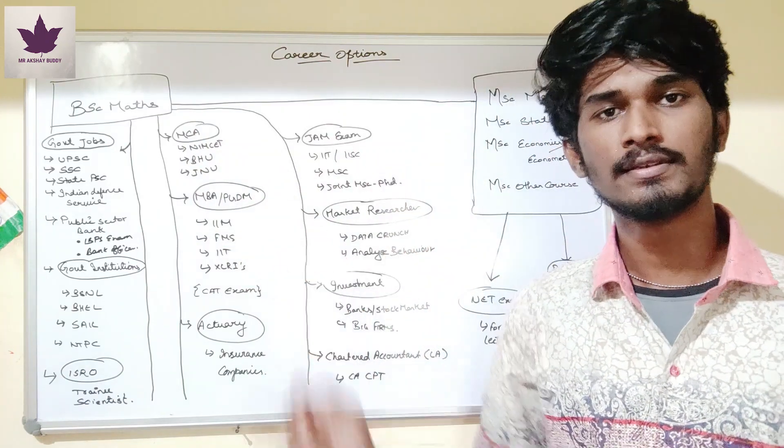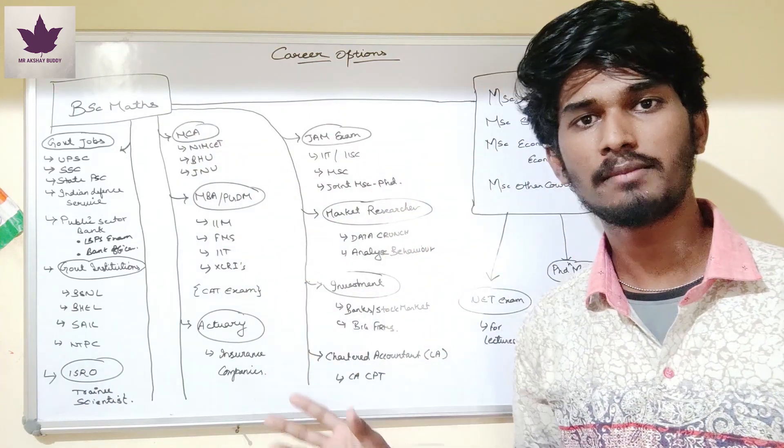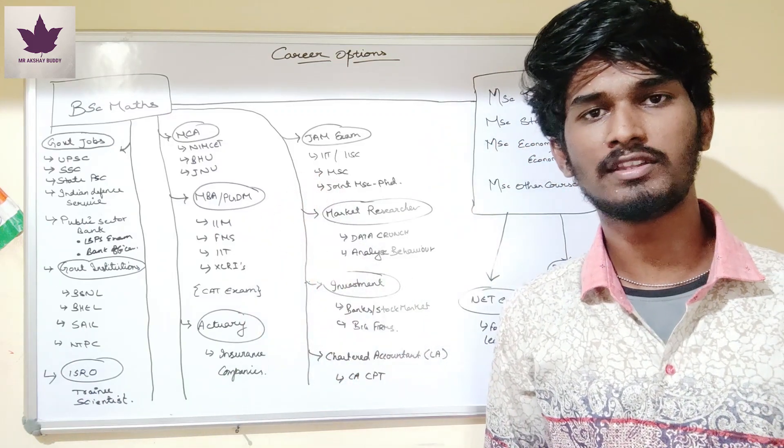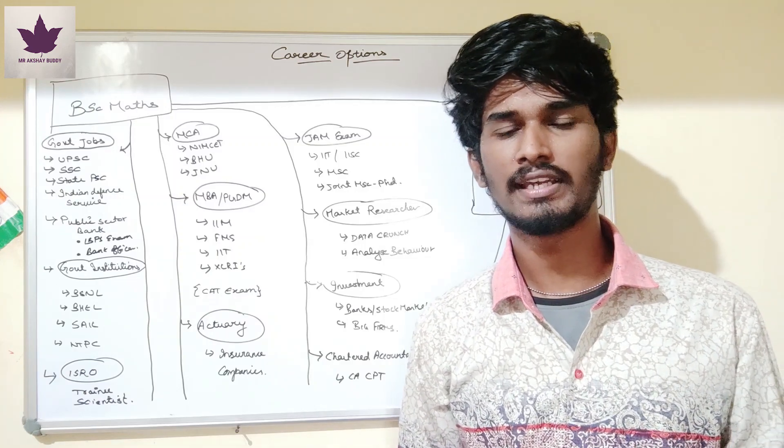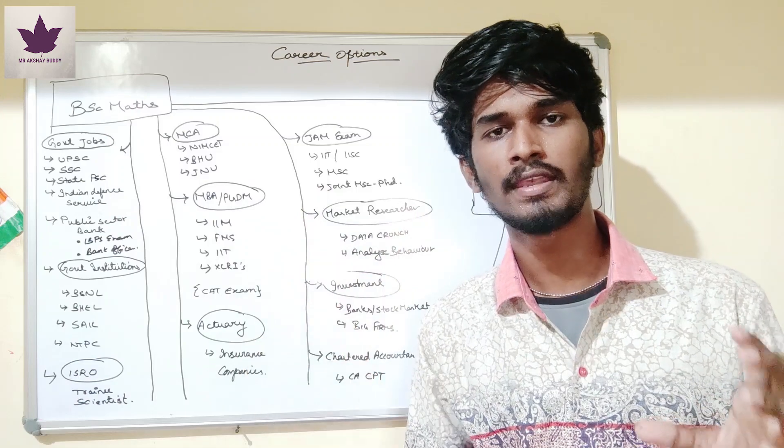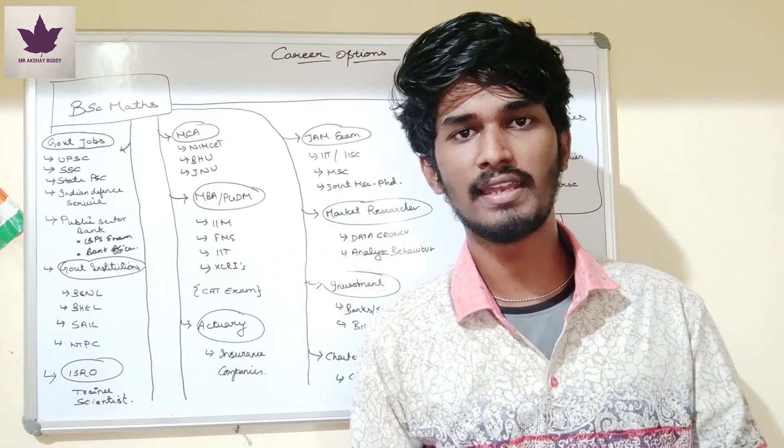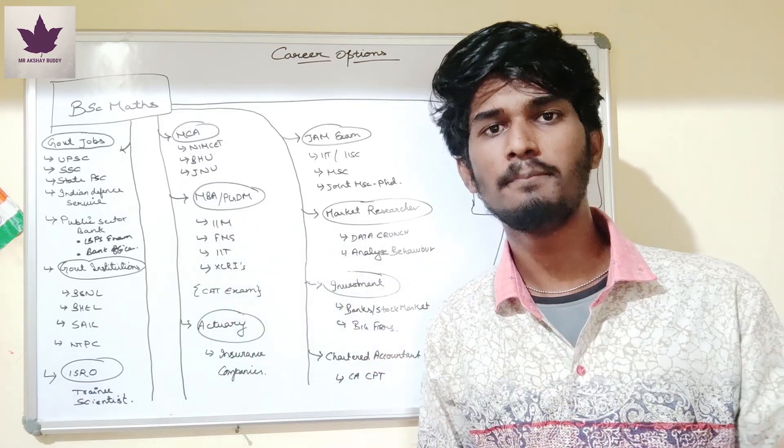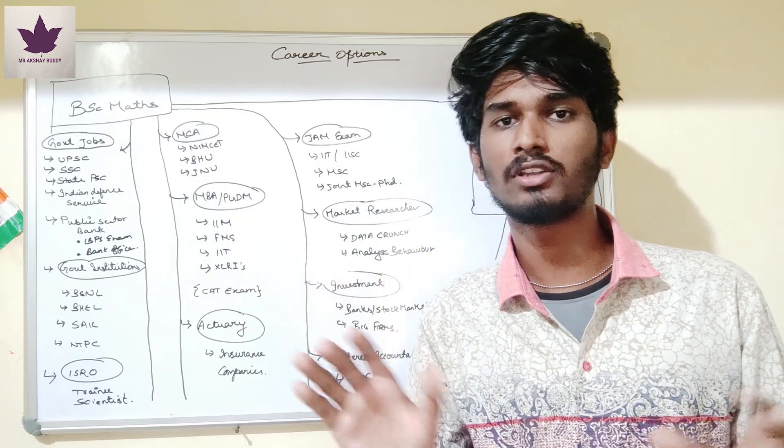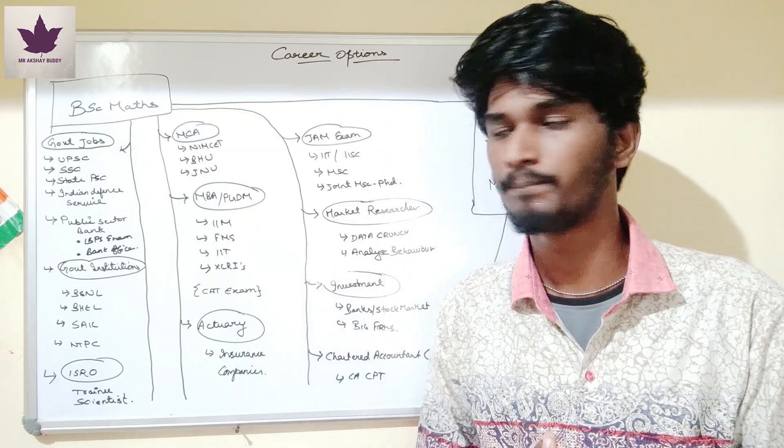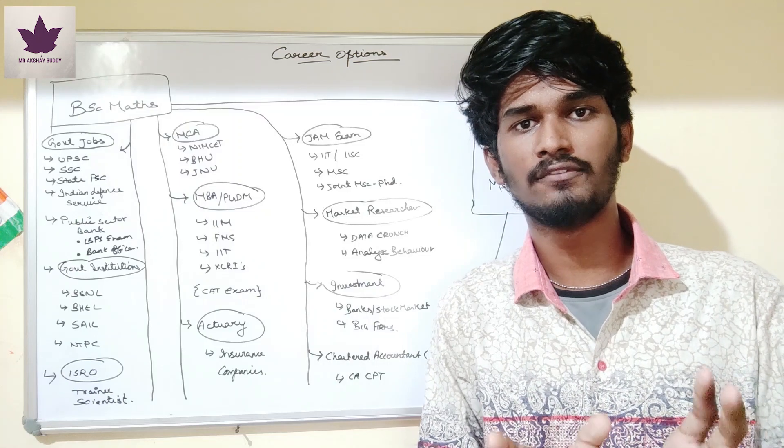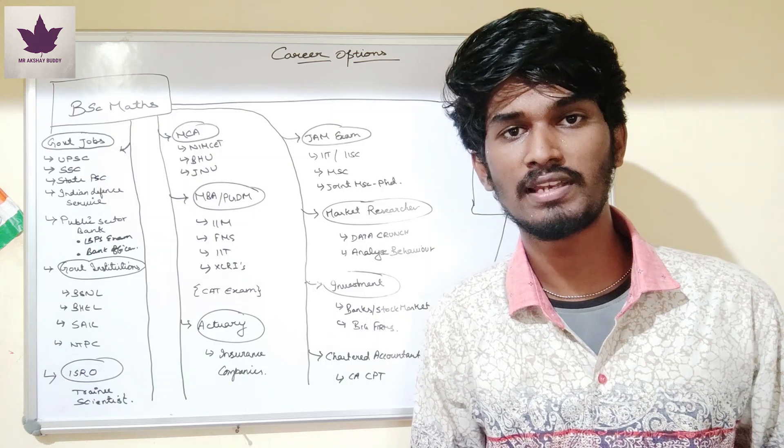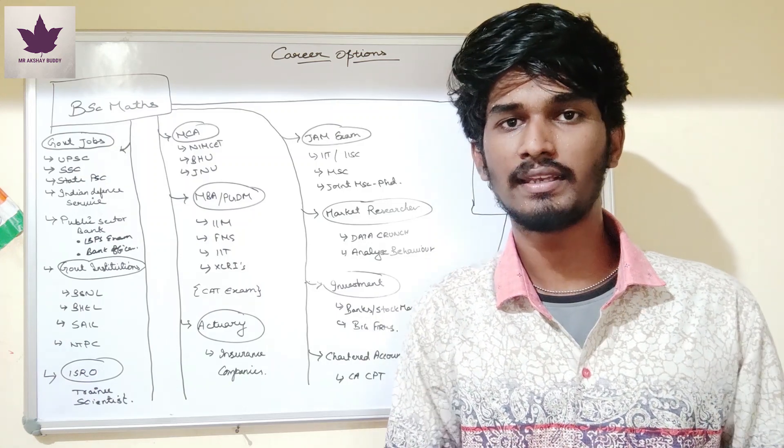The other option is MBA and PGDM. MBA you can do. PGDM is Post-Graduation Diploma in Management. PGDM is similar to MBA but takes 1-2 years compared to MBA's 2-3 years. MBA is education-based, more academic, while PGDM is focused on industry applications. MBA is university-affiliated while PGDM is not necessarily university-affiliated. Both are great fields.